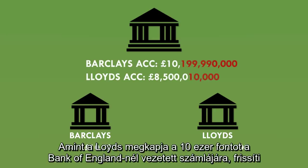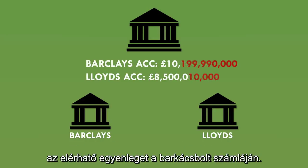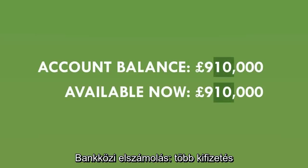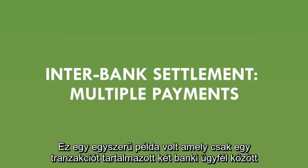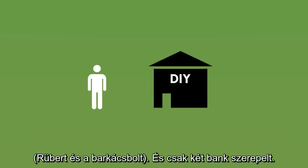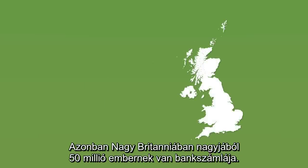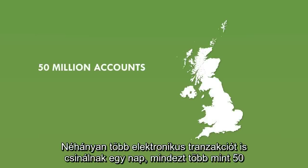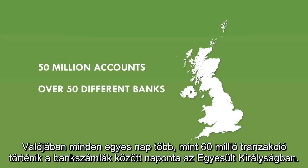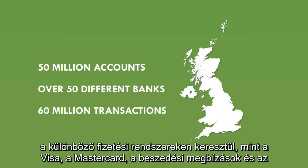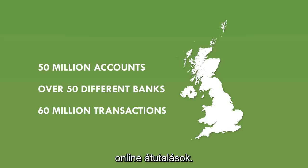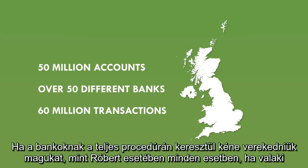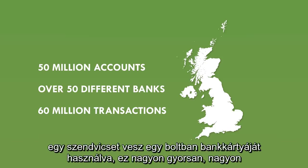Once Lloyd's gets the £10,000 in its account at the Bank of England, it will update the available balance in the DIY store's account. Now, this was a simple example involving just one payment between two bank customers. But in the UK right now there are around 50 million people with bank accounts. Some make more than one electronic payment a day, and they bank with over 50 different banks. Every day, over 60 million transactions are made between bank accounts through payment systems including Visa, Mastercard, direct debit, and online bank transfers. If banks had to go through the whole settlement process every time someone bought a sandwich using their debit card, it would get very messy very quickly.